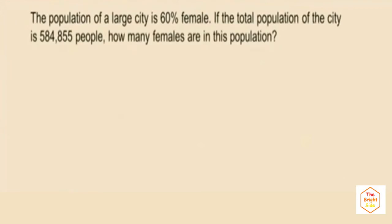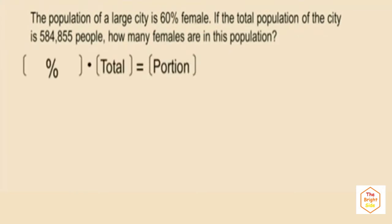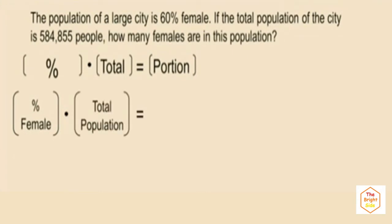The population of a large city is 60 percent female. If the total population of the city is 584,855 people, how many females are in this population? We are looking for the portion — the number of females — so we must be given the total and the percent. Percent times the total is the portion: 60% is the percent, 584,855 is the total, and the number of females is the portion.